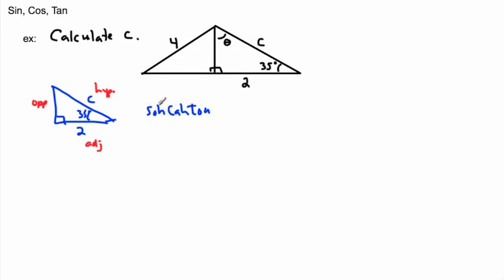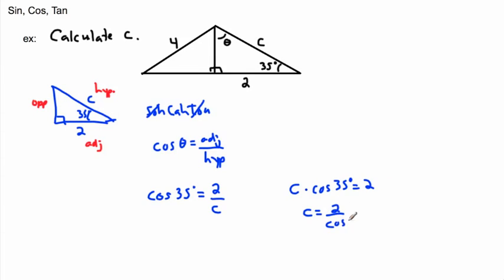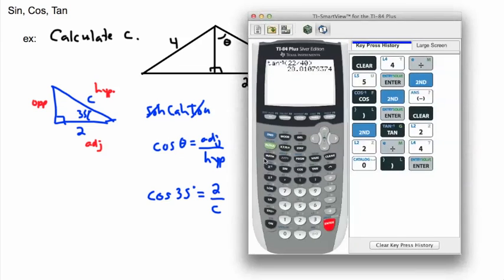So I'll say cos of 35 degrees equals adjacent over hypotenuse, which is 2 divided by C. Now I need algebra to get C on its own. I multiply both sides by C to get C × cos(35°) = 2, then divide both sides by cos(35°), giving C = 2 / cos(35°).